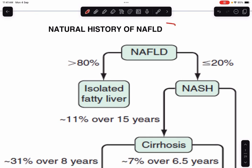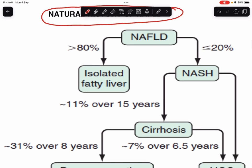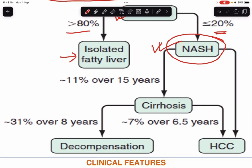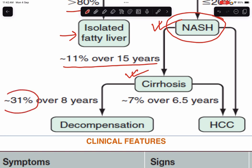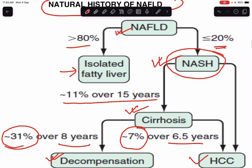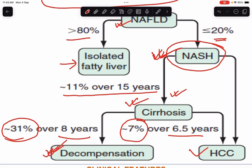What is the natural history of NAFLD? If somebody develops NAFLD, more than 80% of cases will have isolated fatty liver changes, and almost 20% will develop into NASH. Out of NASH cases, almost 11% over the next 15 years will develop liver cirrhosis. About 31% of cirrhosis cases will become decompensated over 8 years, and almost 7% of cirrhosis cases will develop hepatocellular carcinoma over 6.5 years.